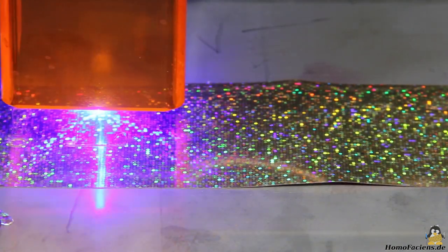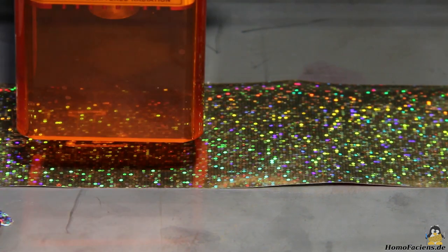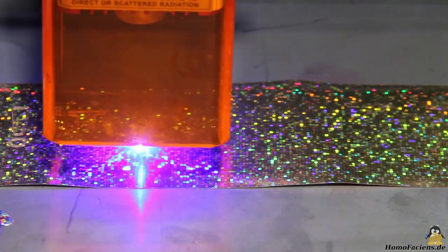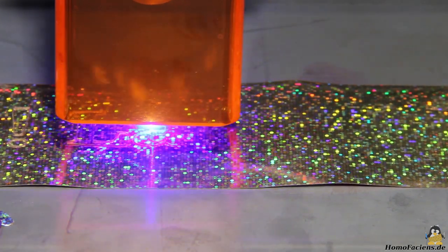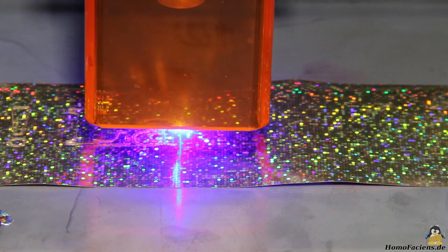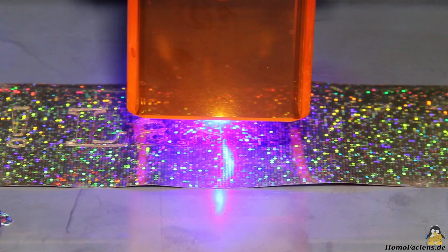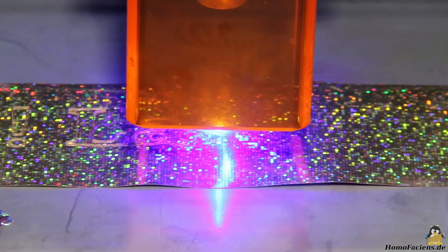Adhesive film can be cut very well with the unmodified device and only a low laser power is required. With lettering in particular it is easier not to work through the graphics line by line, but rather to move with the laser beam along the edges. This results in significantly smoother edges.